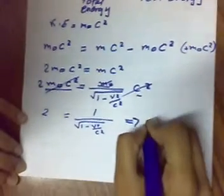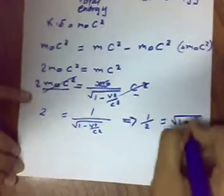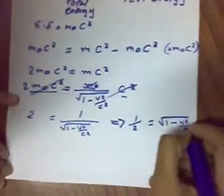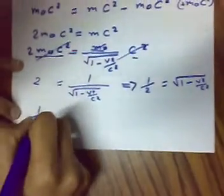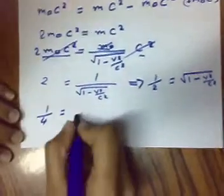We have one half equals square root of 1 minus v squared over c squared. And we take the square of both sides.